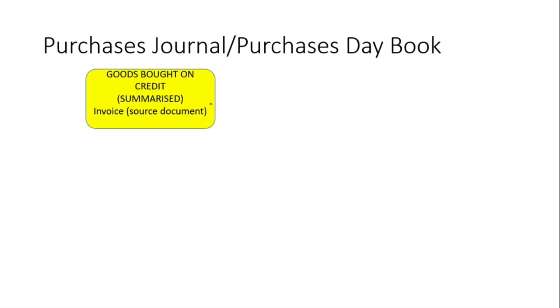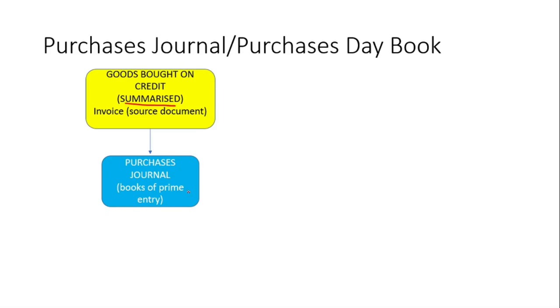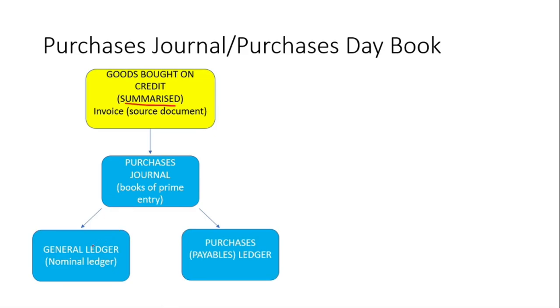For the Purchases Journal, it's going to record different transactions where goods are bought on credit. These transactions are going to be summarized and then put into the Purchases Journal. By having all this information in that book, we're going to be able to do the two ledgers — one will be the General Ledger and the other will be the Payables Ledger. For the General Ledger we're going to debit the Purchases Account, and for the Payables Ledger we're going to credit Trade Payables.